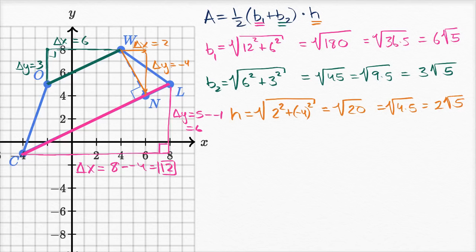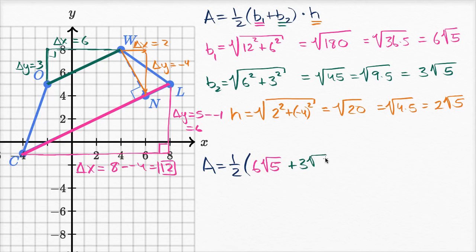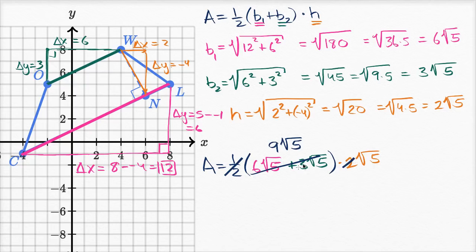Now we substitute into our original expression. The area of our trapezoid is one-half times six square roots of five plus three square roots of five, times two square roots of five. Six square roots of five plus three square roots of five is nine square roots of five. The one-half and the two cancel out to one, so we're left with nine square roots of five times the square root of five. The square root of five times the square root of five is just five, so this equals nine times five, which is 45 square units.